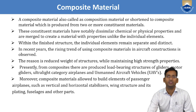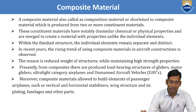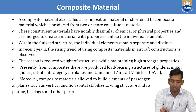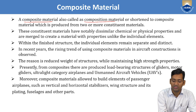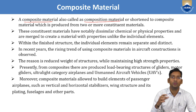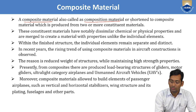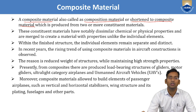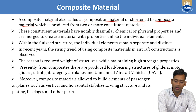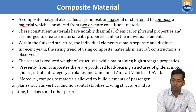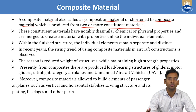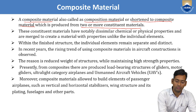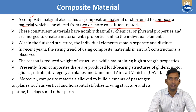Composite material is also called composition material. Composition means a mixture of two or more things. So composite material, in short, is a material which is produced from two or more constituent materials — meaning that a minimum of two or more constituent materials are required to form a composite material.